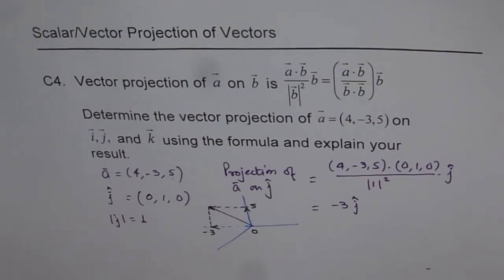Similarly, in R2, if I have a vector, let's say (3, 4), then this projection will be 3 along the X axis and 4 along the Y axis.